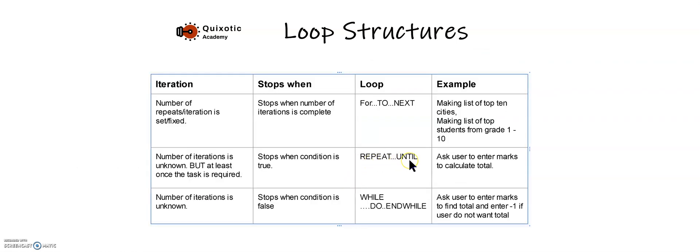The next kind of loop is repeat until. Repeat until is very useful when the number of iterations is unknown, but at least once the task is required — you have to do the thing at least once. This loop will stop whenever the condition is true, because the condition is checked at the end, after the 'until' part. For example, when you ask the user to enter marks to calculate the total, the user has to at least provide one or two marks.